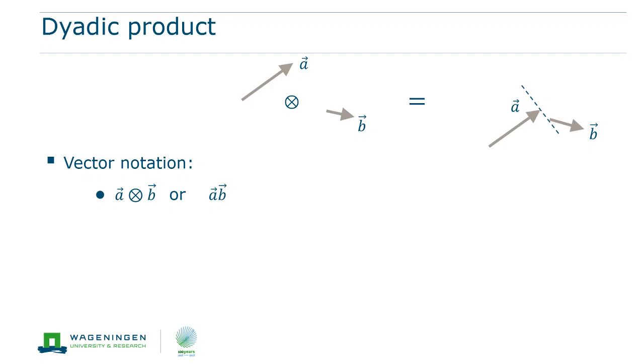Finally, we come to the dyadic product. This is indicated by a cross inside a circle. But oftentimes this symbol is left out and the vectors are just placed next to each other, just as when multiplying two variables.